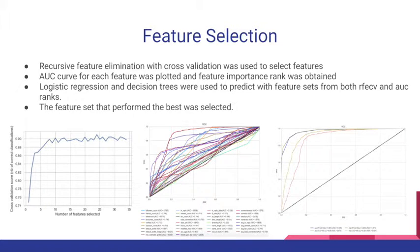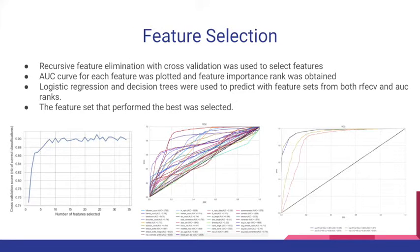In the first graph, as the number of features increases the corresponding accuracy also increases, and we found the optimum number of features to be 24. In the second graph, the AUC curve is shown for different features. We combined the two feature subsets into a single ranking using pandas rank method, then applied logistic regression and decision tree to determine whether to use the RFECV or the AUC rank curve. We plotted the ROC curve for both classifiers with the corresponding feature subsets, shown in the third graph, and selected the best feature set as the final feature set for our model.